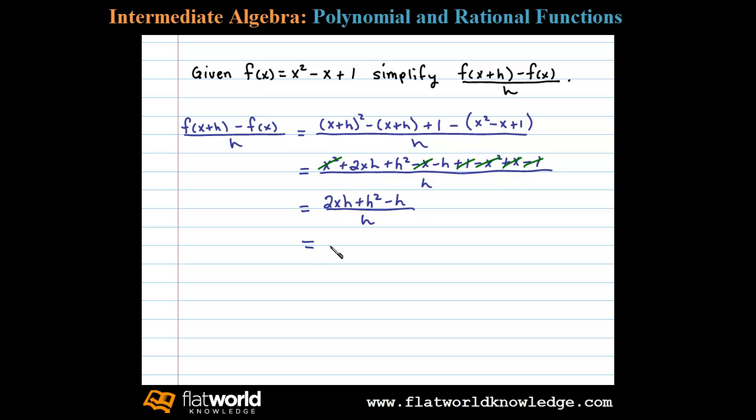Now notice h is the GCF in the numerator. We can factor that out, leaves us with h(2x + h - 1) all divided by h. And then finally, dividing out h, we have our end result: 2x + h - 1.